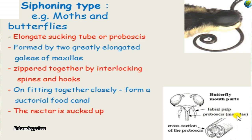The galea of the maxillae zip together with spines to form food canals only — they do not possess salivary canals. They suck sap or nectar available on the outside. When the proboscis or siphoning mouthpart is not in use, it is coiled like a watch spring and kept below. When food is available, it is extended by pumping blood into the galea, and they feed on the available nectar.